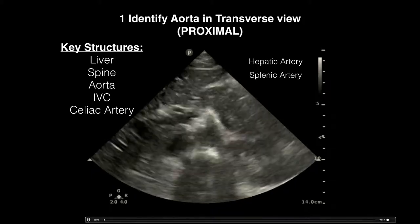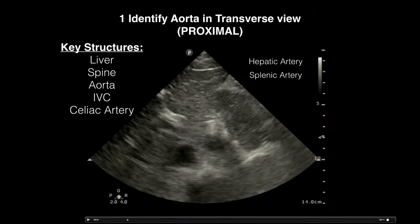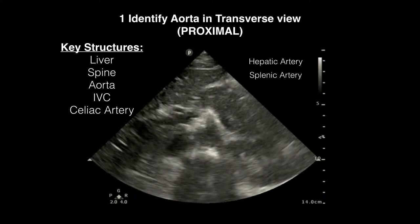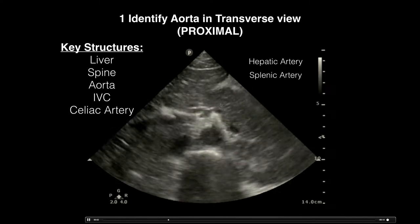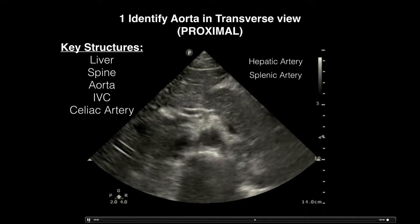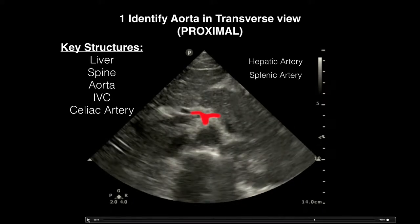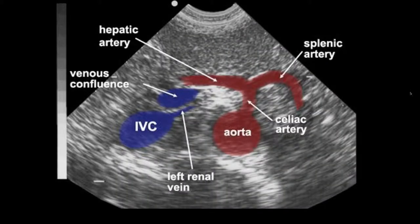As you scan through, the IVC will be towards the left of the screen. You can see the aorta branch into the celiac artery, which then becomes the hepatic artery and the splenic artery — this is sometimes called the seagull sign because it looks like a seagull. On the static image you can identify the aorta, celiac artery, seagull sign, hepatic artery, splenic artery, and IVC.